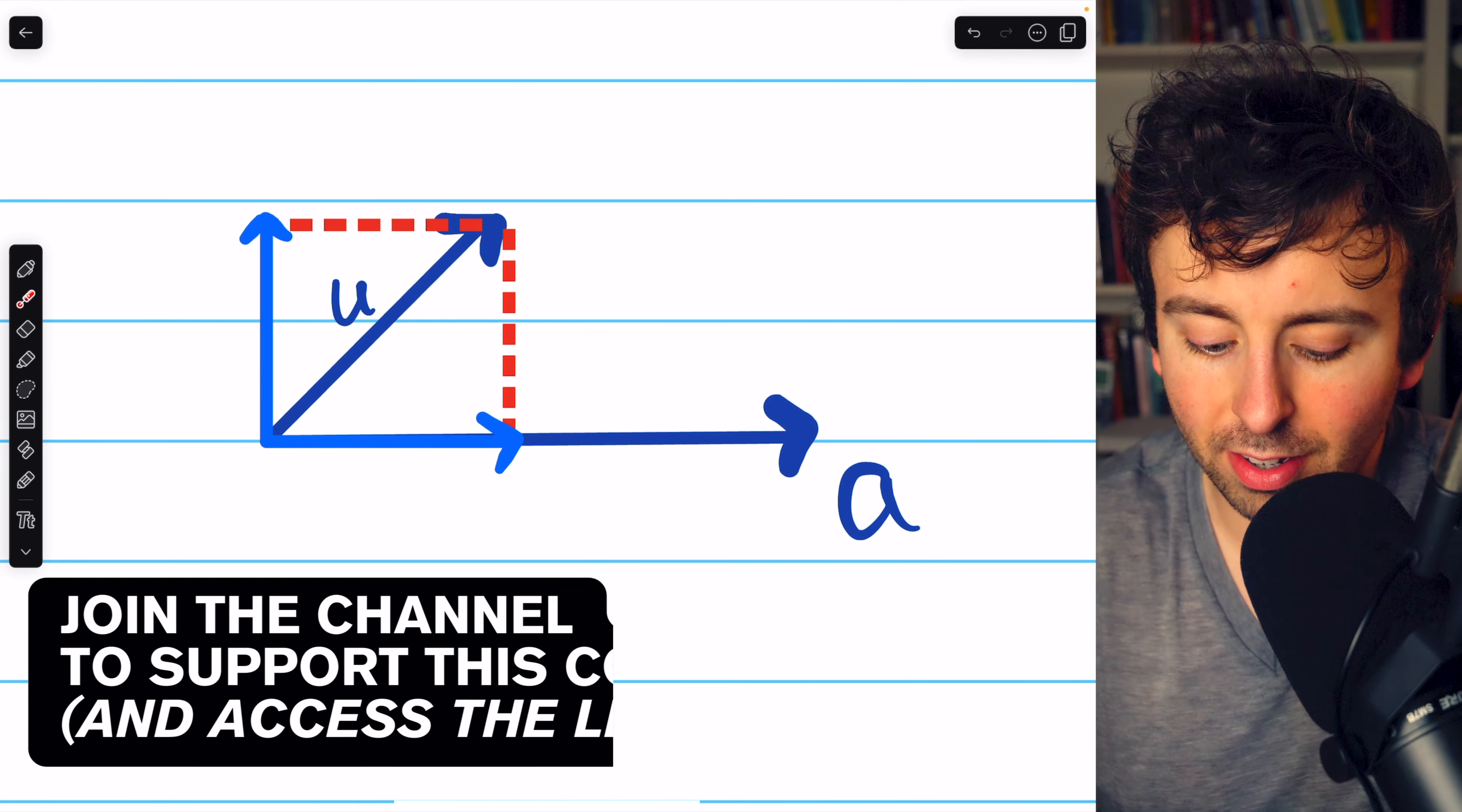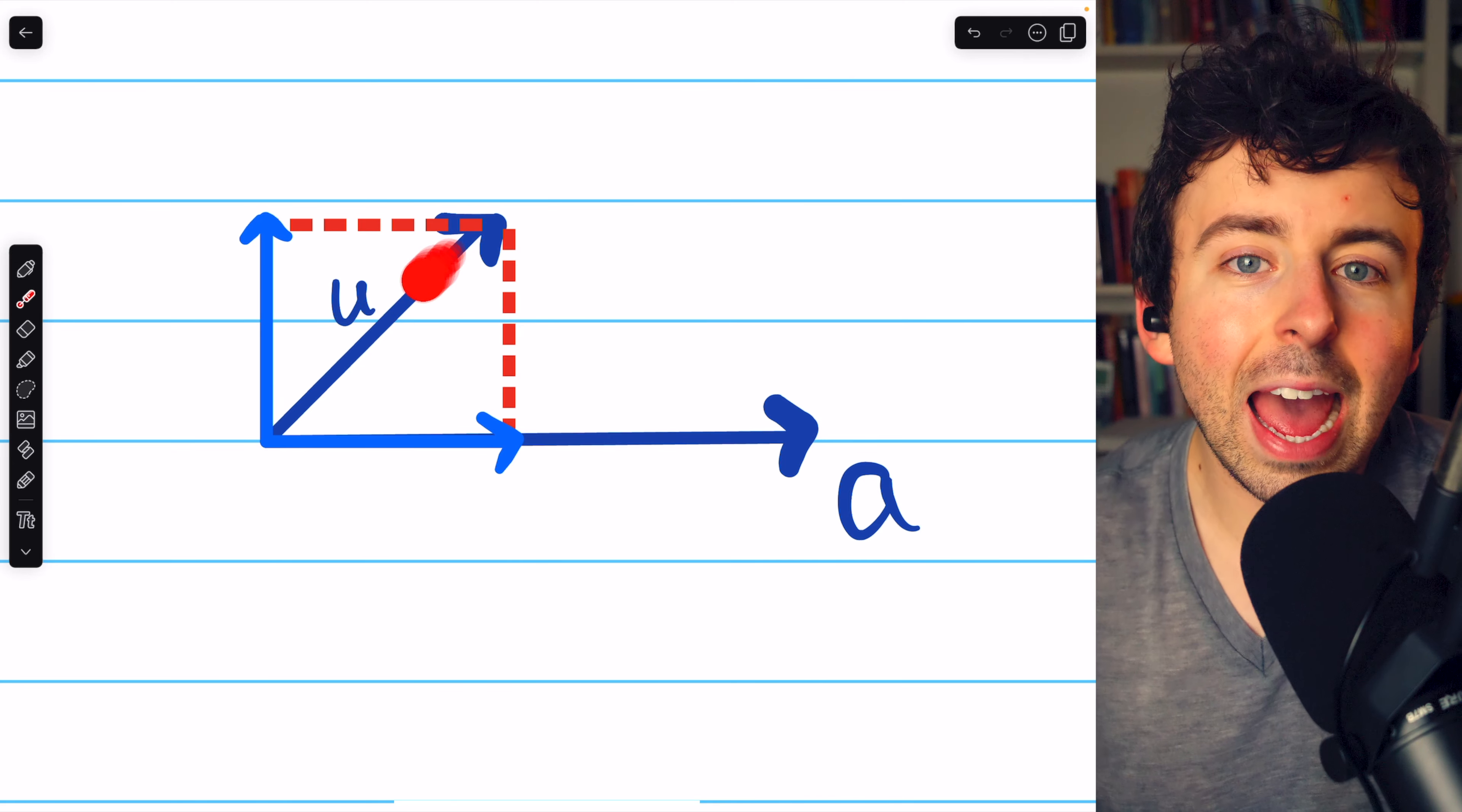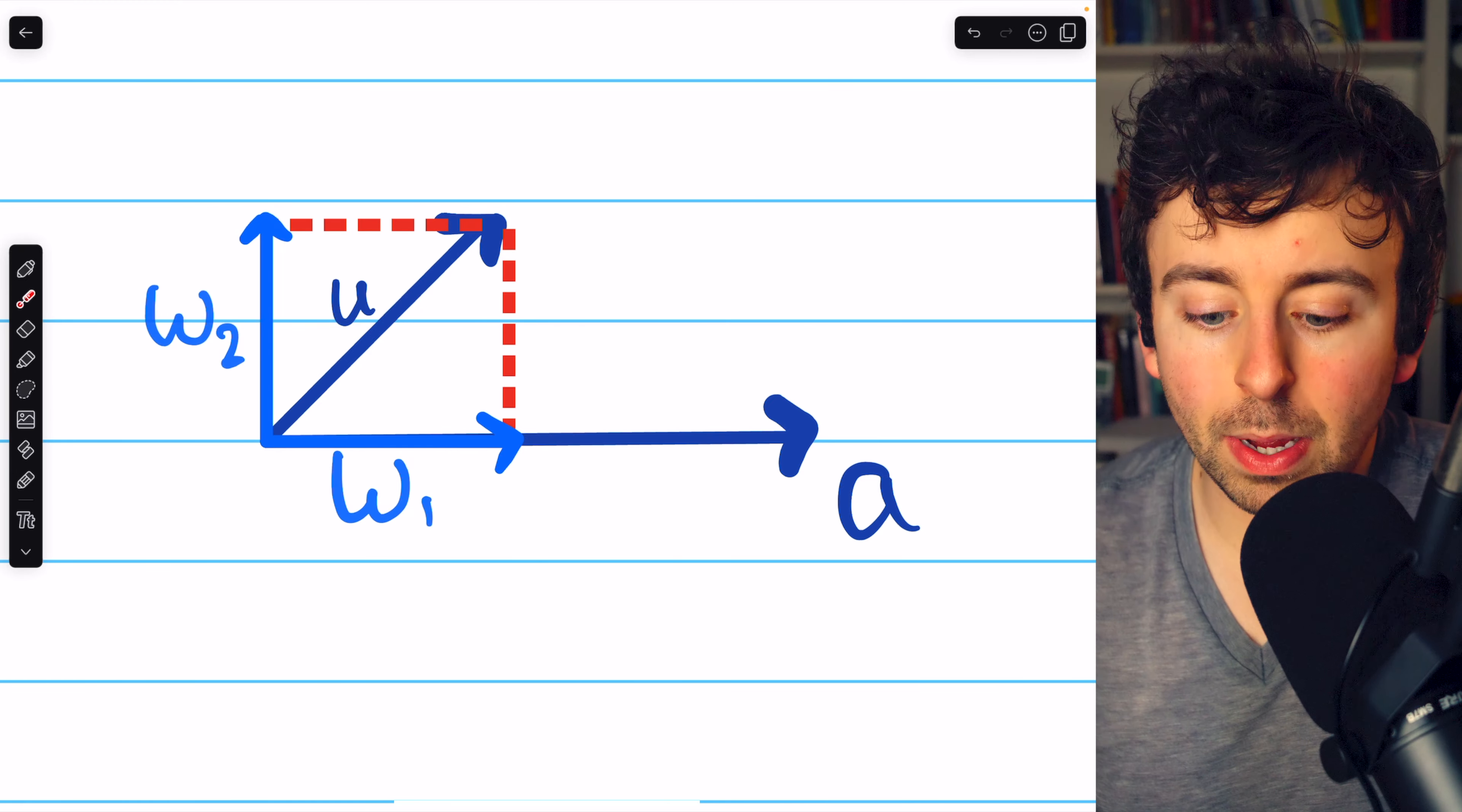Given a vector u and some other non-zero vector a, in many applications it's useful to be able to write the vector u as a linear combination of a scalar multiple of a and some vector orthogonal to a.